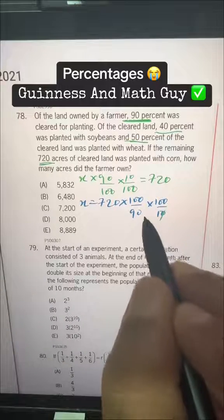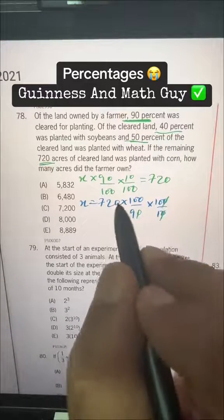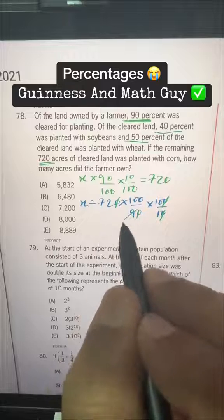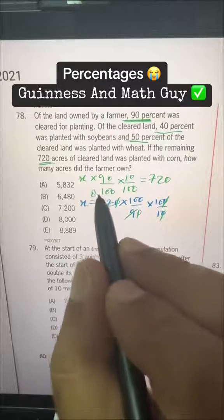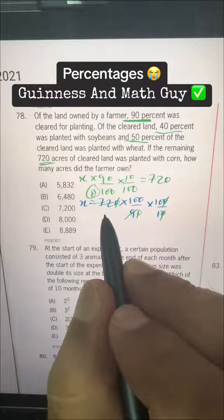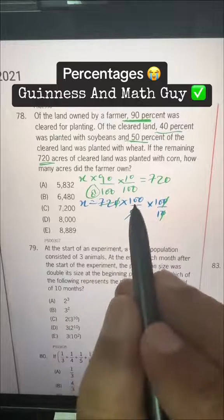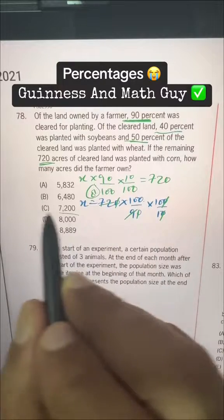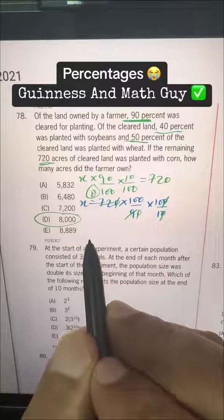Now these two zeros can be cancelled with these two zeros, and we have 9 times 8 is 72, giving us 8000. So that's our answer, choice D.